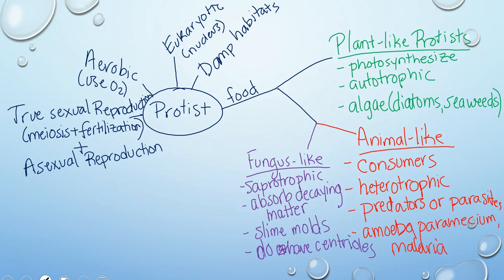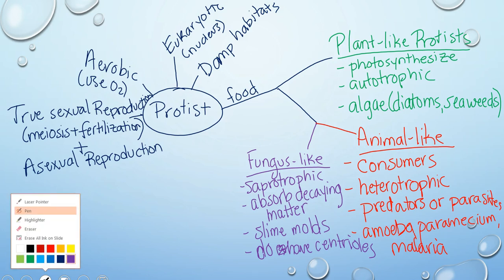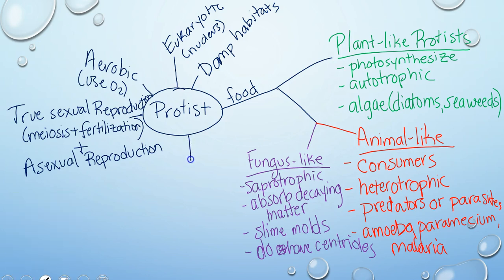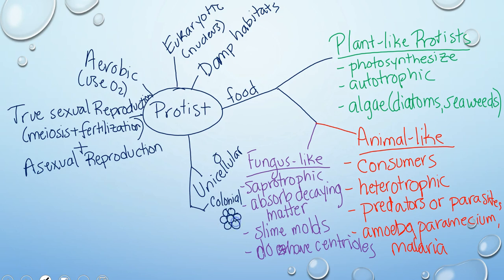Another way we can differentiate among protists is by how their cells are grouped. Protists can either be unicellular or have multiple cells. In having multiple cells there are a few options: they can be colonial, meaning a bunch of the same cells grouped together without defined tissues; they can be filamentous, meaning cells arranged in long chains; or they can be truly multicellular — like a seaweed — with distinct tissues.